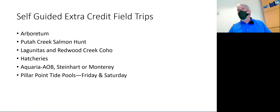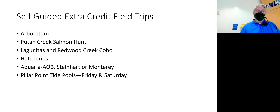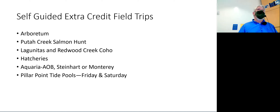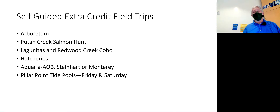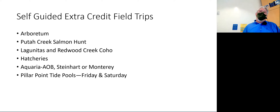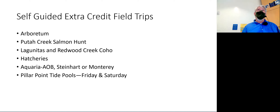Lagunitas Creek and Redwood Creek to look at the coho run require a car to get to Marin County. The hatcheries on the Feather River or American River require a car. For aquaria, there are three options: Monterey Bay Aquarium, the Steinhardt Aquarium, and the Aquarium of the Bay — which is focused almost exclusively on marine fishes and is quite good for regional species. All require transportation, though you could take the train into San Francisco. And then there are the Pillar Point tide pools, to see intertidal fishes — mostly acanthopterygian spiny ray fishes that dominate the marine environment.